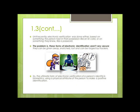So the ultimate form of electronic verification of a person's identity is biometrics — using a physical attribute of a person to make a positive identification. It can neither be lost, taken away, nor forged. Examples include the fingerprints of a human, the irises, or the face itself. Therefore, it is the best solution possible in today's society.